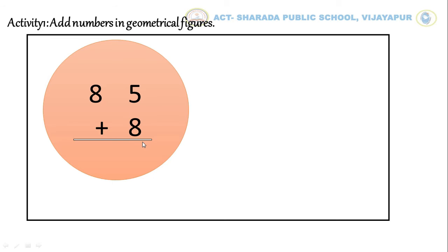In 1's place, the given numbers are 5 and 8. We have to add these numbers. 5 plus 8 is equal to 13. Here, 13 is a 2 digit number. So, 3 stays in 1's place and 1 is carried over to the 10's place.